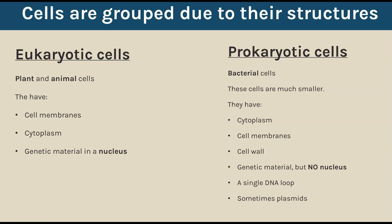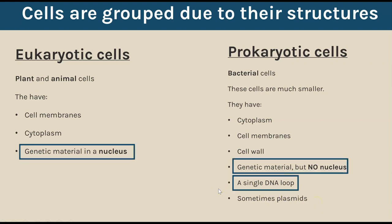The big difference is prokaryotic cells do not have a nucleus. They do still have genetic material, which is DNA, but you will find that as a single loop loose within the cytoplasm. They also sometimes have an extra circular loop of DNA called a plasmid. If asked in an exam to identify similarities between eukaryotic and prokaryotic cells, the best two to go for would be cell membranes and cytoplasm - that is consistent across plants, animals, and bacterial cells.